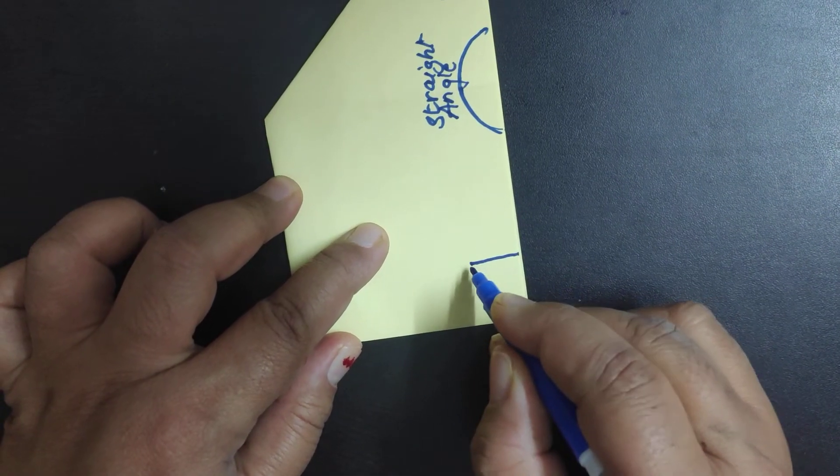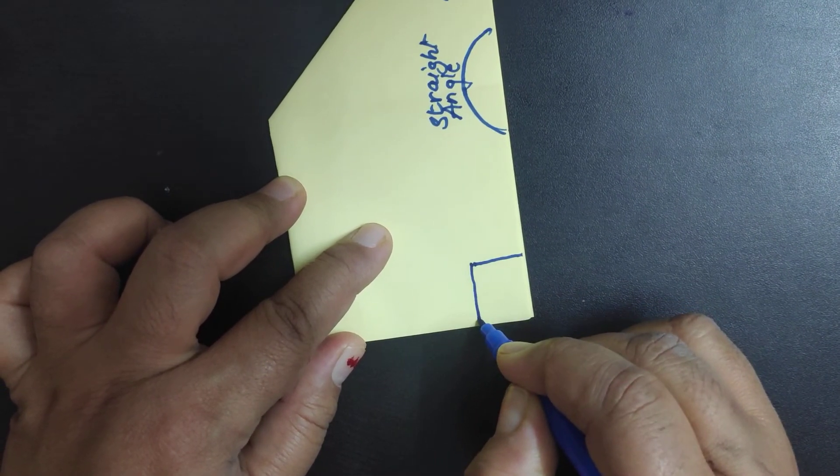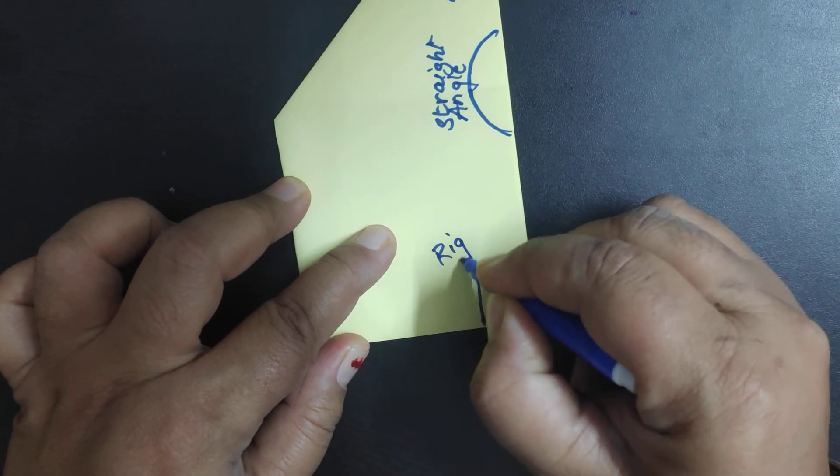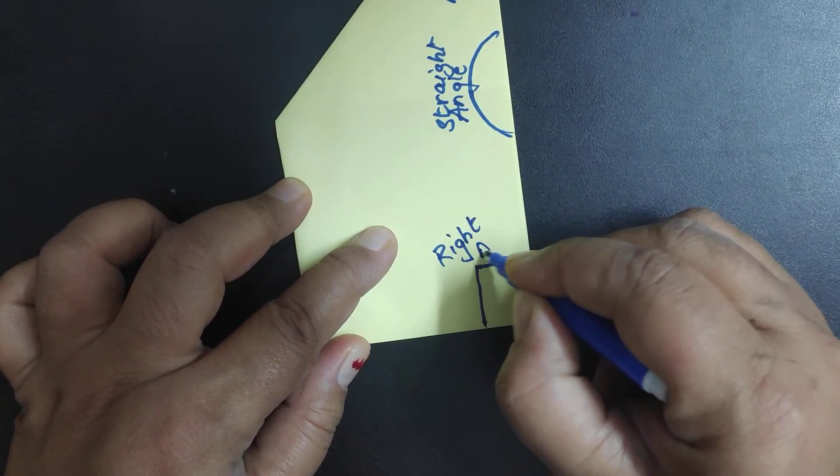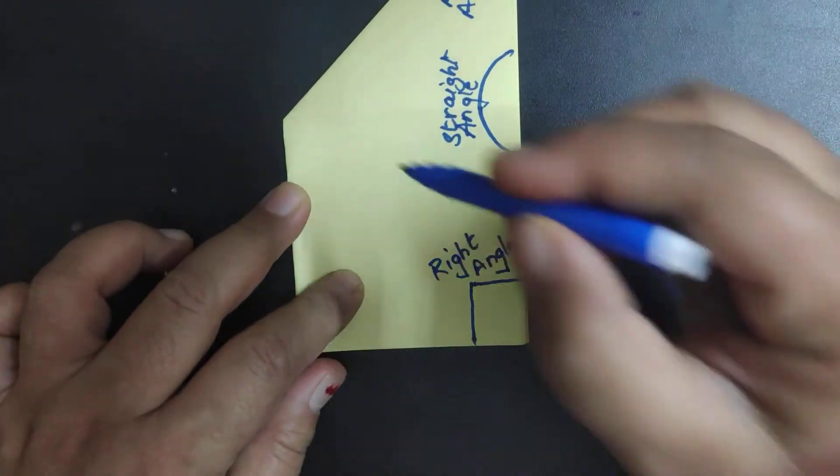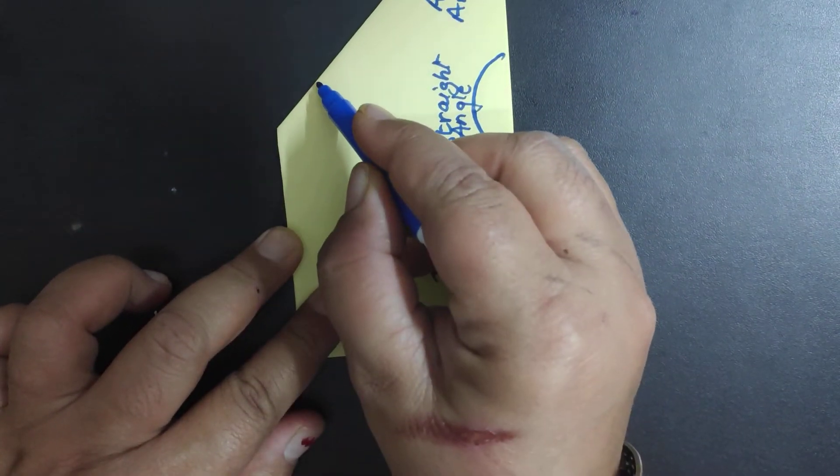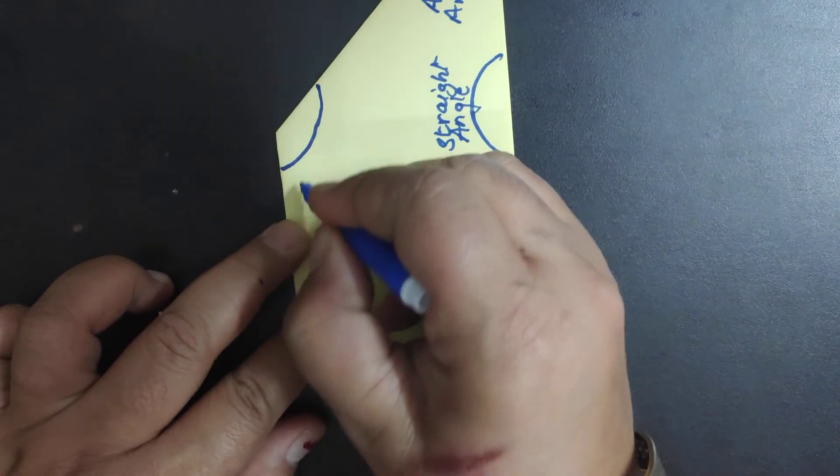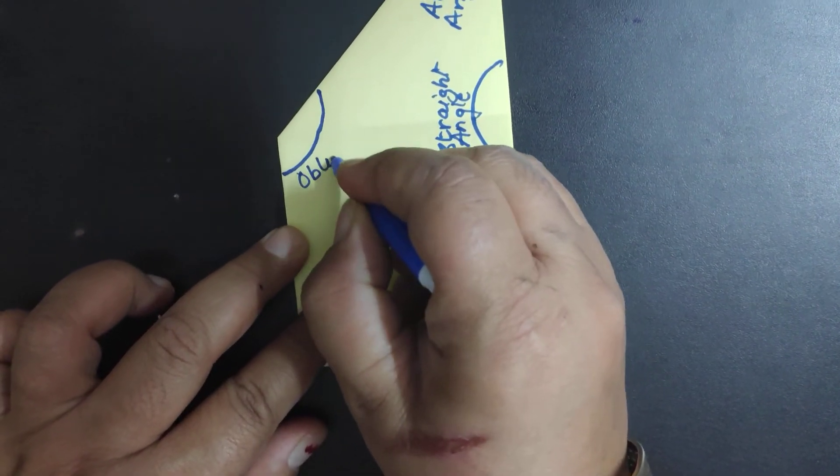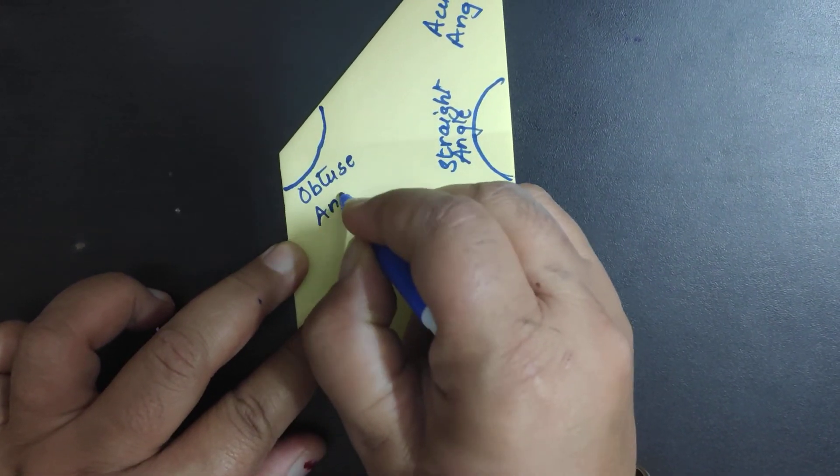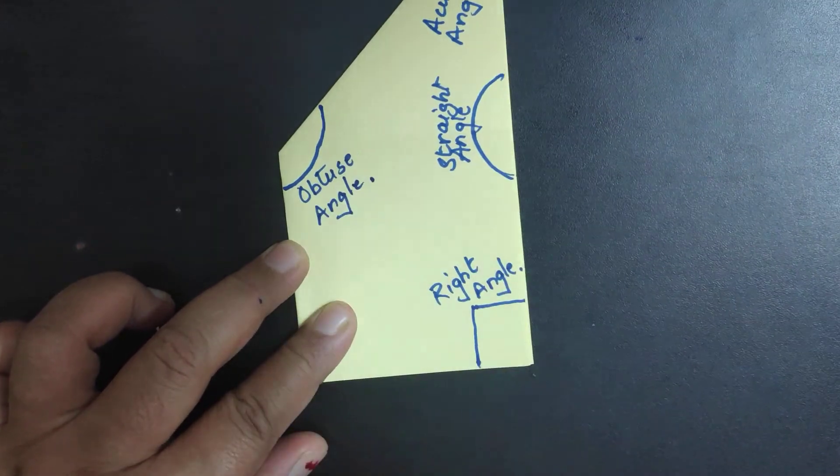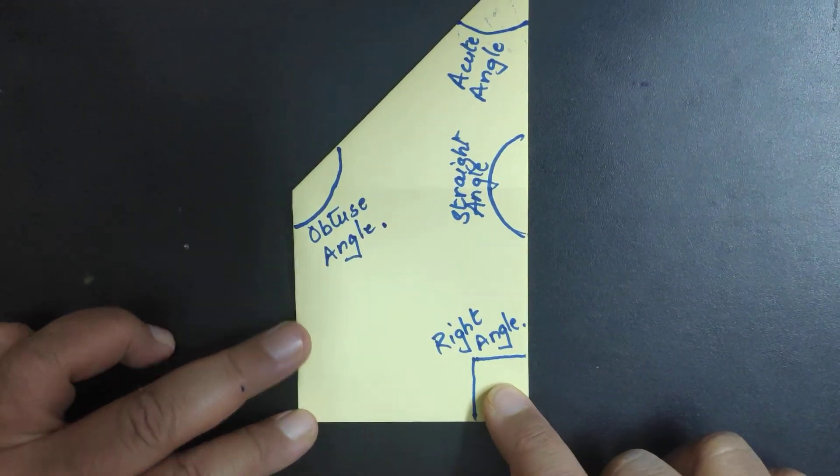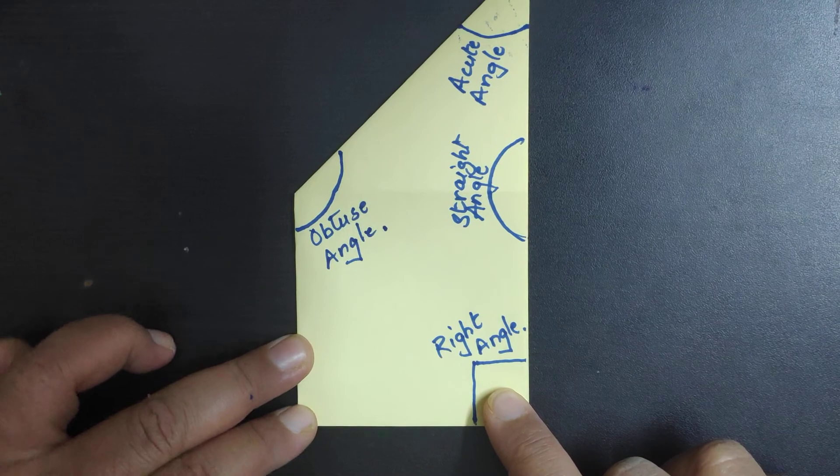Here it is like L, so it is forming a right angle. And at this corner it is more than L, so obtuse angle. More than 90 degree obtuse angle. Now you can see that all four angles can be shown with a single figure.